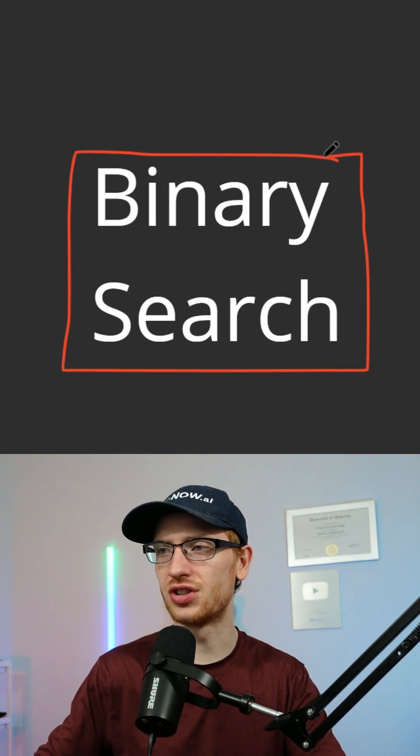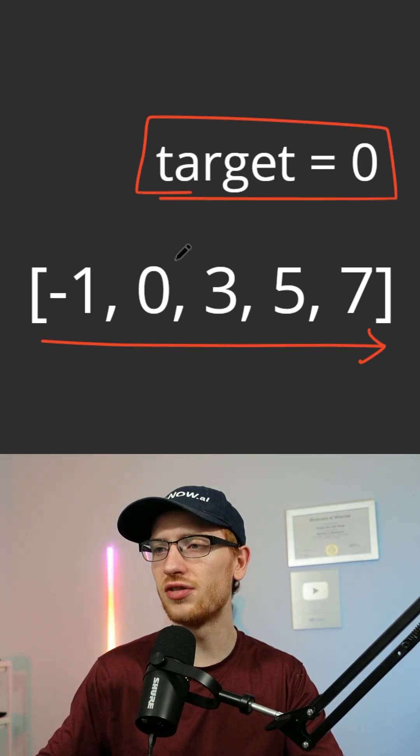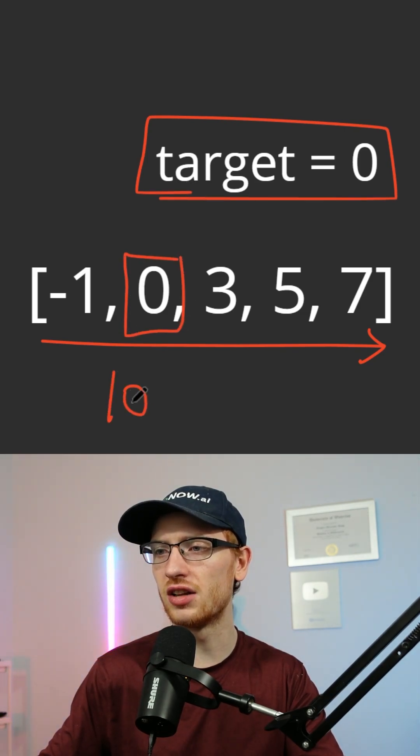This is how to do a classic binary search. Given a sorted list of numbers and a target to search for, we can find that target in the array in log n time.